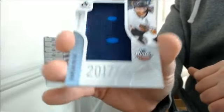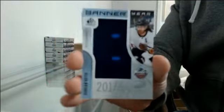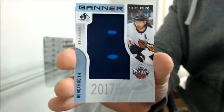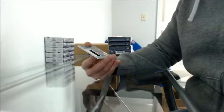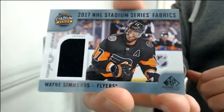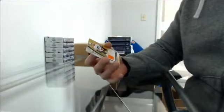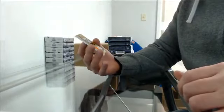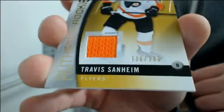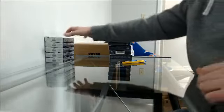Banner year for Chicago, Duncan Keith. Kloppik. Stadium series fabrics jersey going to Philadelphia, Wayne Simmons. And authentic rookie jersey 306 to 399 for Philadelphia, Travis Sanheim. Box 6.